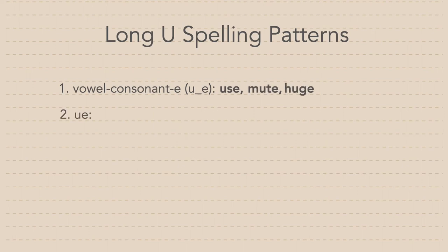The second spelling pattern is U-E. Words with this pattern include value and argue.